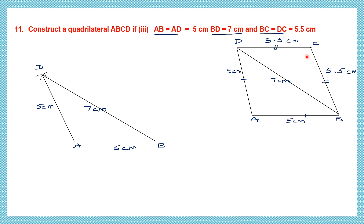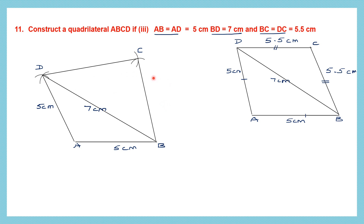Now for BC which is 5.5 centimeters: take 5.5 centimeters on your compass, place the needle at B and draw an arc. DC is also 5.5 centimeters, so place the compass at D, take 5.5 centimeters and cut this arc. That point of intersection is C. Join DC and join BC, and now we have our quadrilateral ABCD — the required quadrilateral.